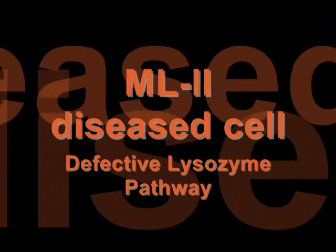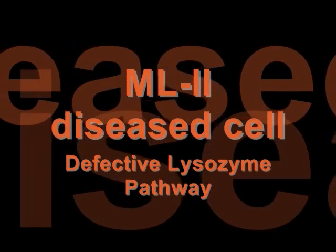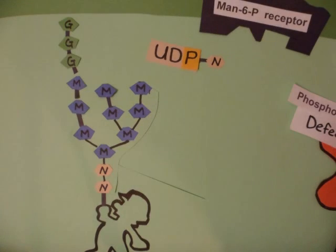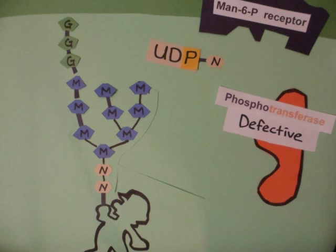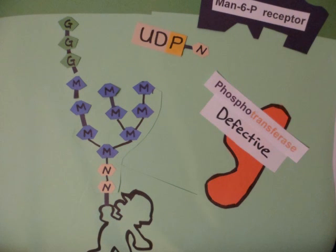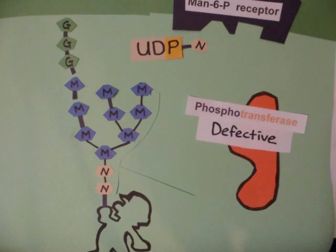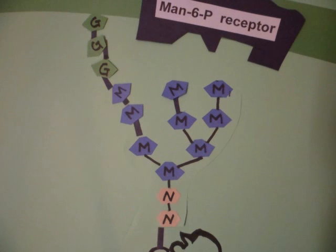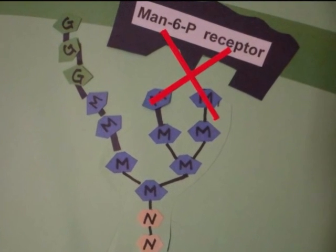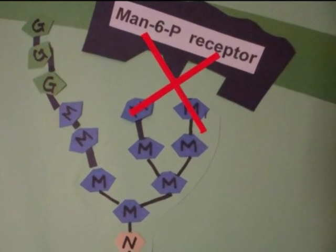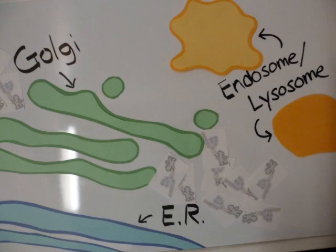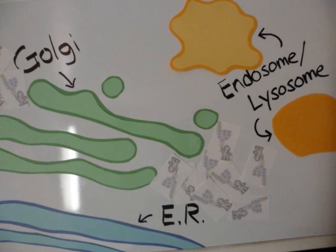Now let's look at the enzyme pathway in a mucolipidosis II diseased cell. Within the trans-Golgi, the GlcNAc phosphotransferase is defective or greatly reduced in number, so the protein can no longer function to add the GlcNAc phosphate to the oligosaccharide. Therefore, the mannose-6-phosphate receptor is unable to recognize the lysosomal enzyme, and the enzymes are instead accumulated and secreted out of the cell into blood plasma.